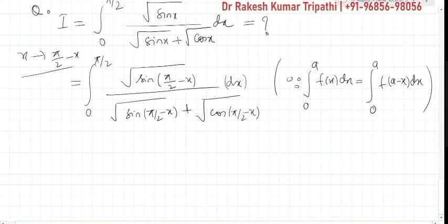And in dx, no change will be there. You can see x should be replaced by a - x, but dx will remain as it is. In dx, no change will be there. This is what this is I. We have used the property what we have quoted here.